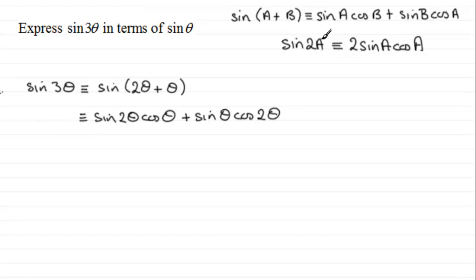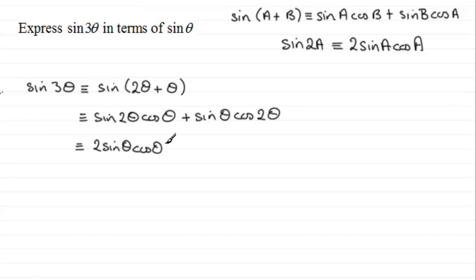So if we let A represent θ, sin(2θ) = 2sin(θ)cos(θ). We replace sin(2θ) with that, giving us 2sin(θ)cos(θ) all multiplied by cos(θ). Then we move on to the second term: plus sin(θ) times cos(2θ).